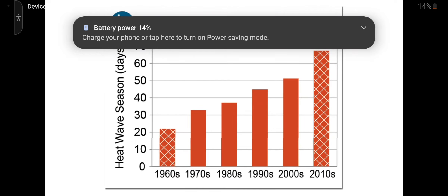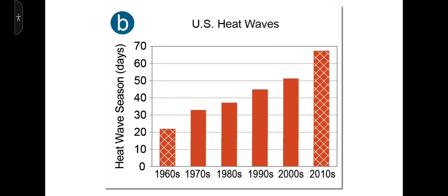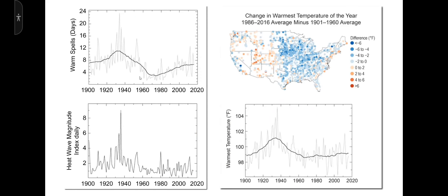First, let's look at the heat wave graph which starts in 1960. They carefully picked a period during the global cooling scare to start their graph so that they could show heat waves increasing over time. Here's the underlying data from the part of the National Climate Assessment which didn't go out to journalists and politicians.